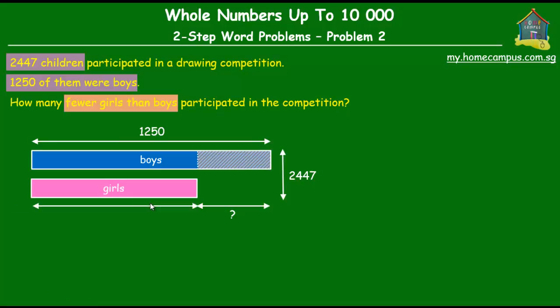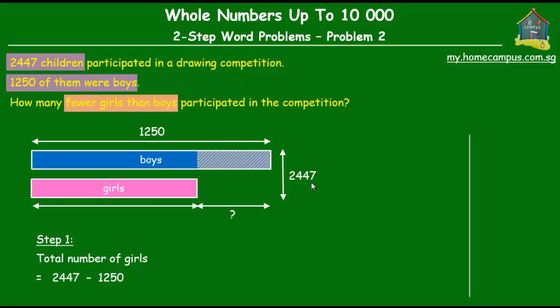Now, from here, can we find out how many girls there were? It's quite easy. All we have to do is subtract 1,250 from 2,447 — the total number of children minus the number of boys — and that will give us the total number of girls. So, 2,447 minus 1,250. We will do the working over here on the right of the screen. So 7 minus 0 is 7. Then we subtract the tens — we will have to regroup the hundreds. If you don't know the detailed steps of subtraction, please watch our tutorial on subtraction with regrouping.